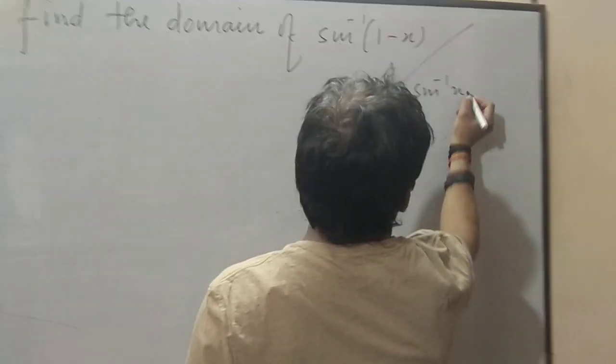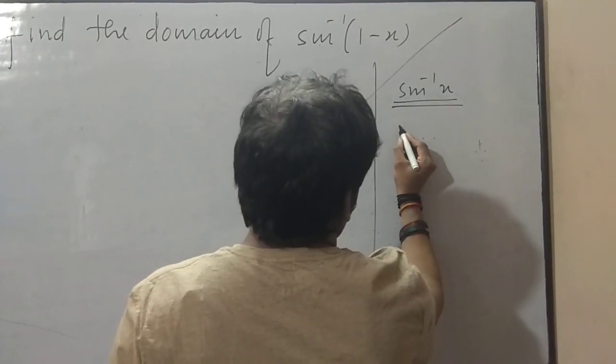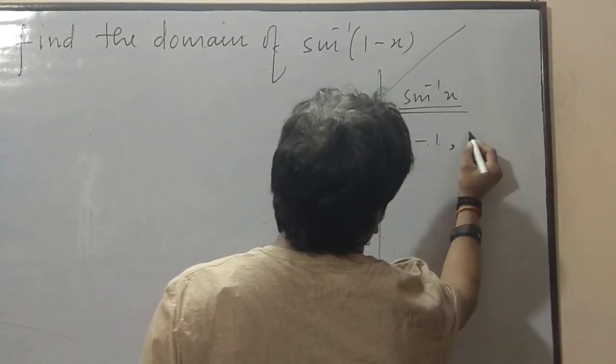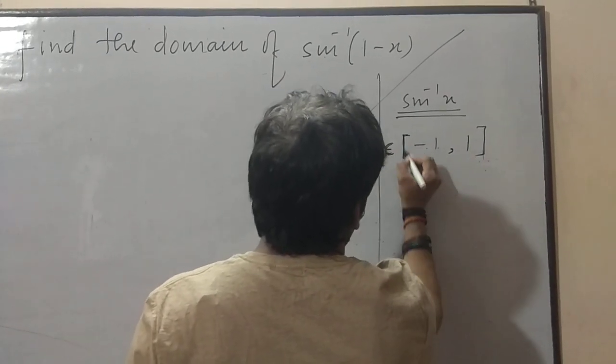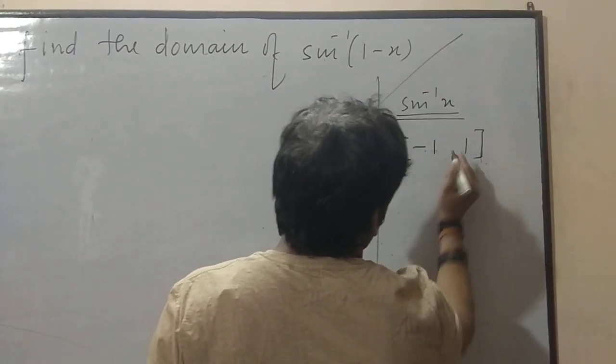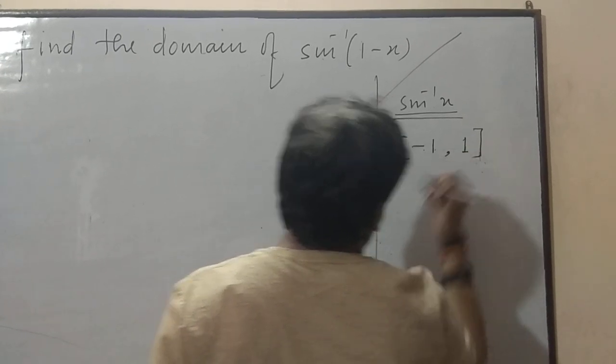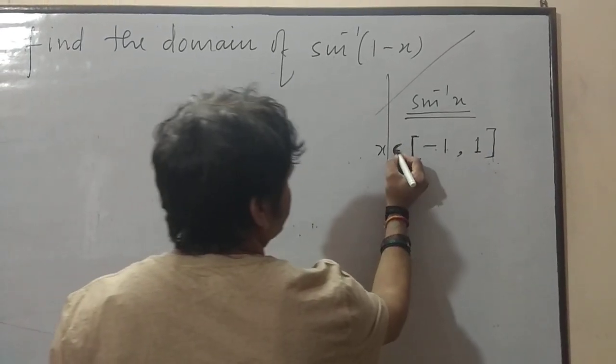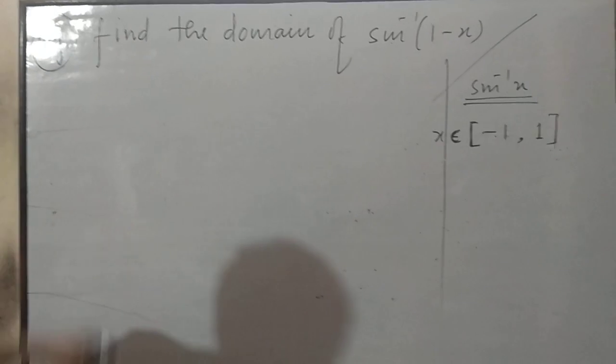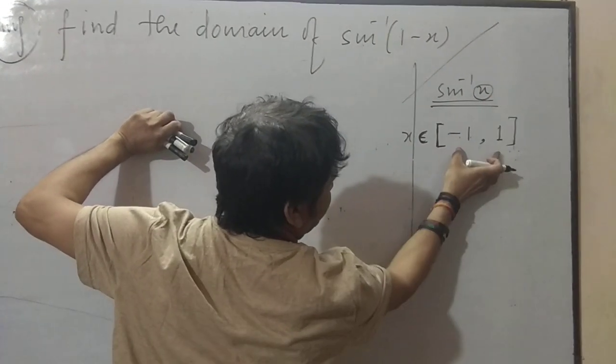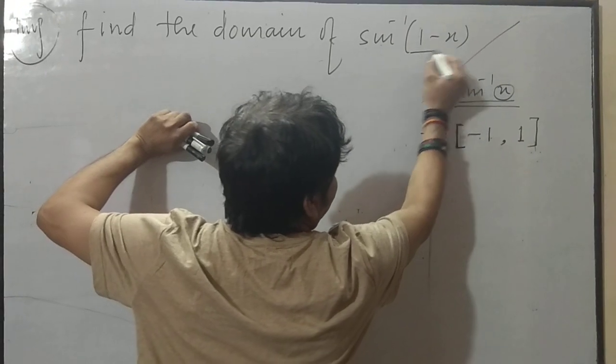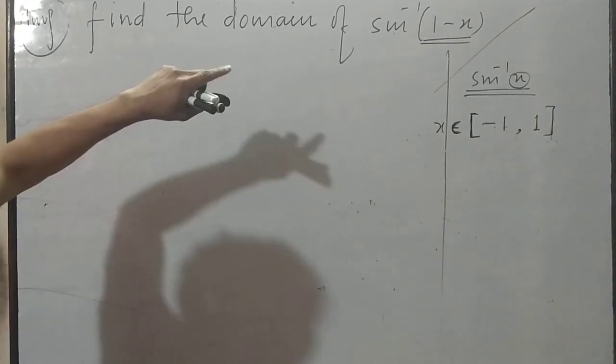Now sideways you will go. Sin inverse x, check it out in your table. Its domain is minus 1 to 1. x belongs to close bracket minus 1 comma 1. Check in your table. In the last videos you will be finding it. Now see, x and this x will be in this range. Here x is 1 minus x. Learn it by heart, check it out.